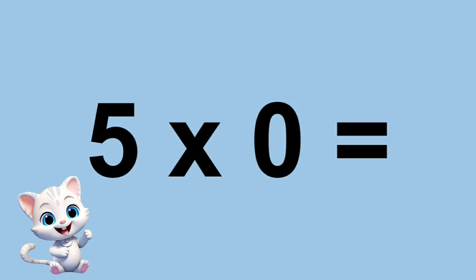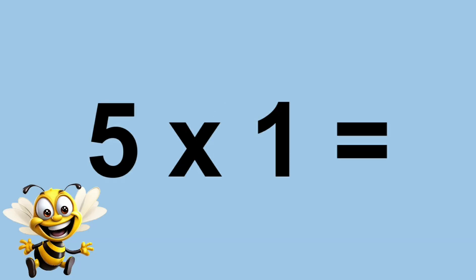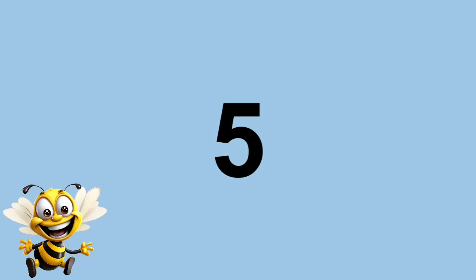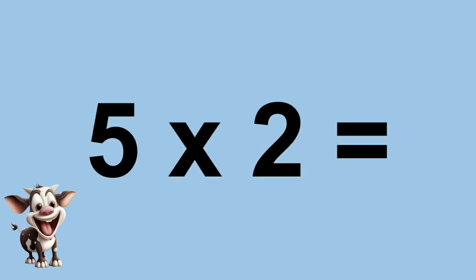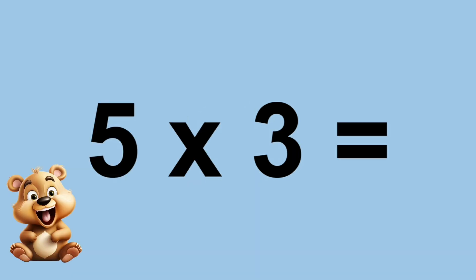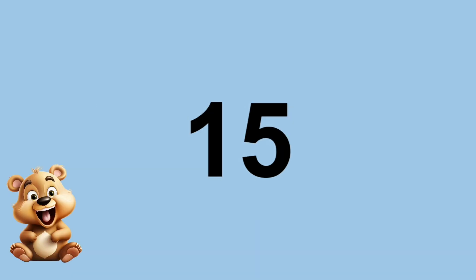5 times 0 equals 0. 5 times 1 equals 5. 5 times 2 equals 10. 5 times 3 equals 15.